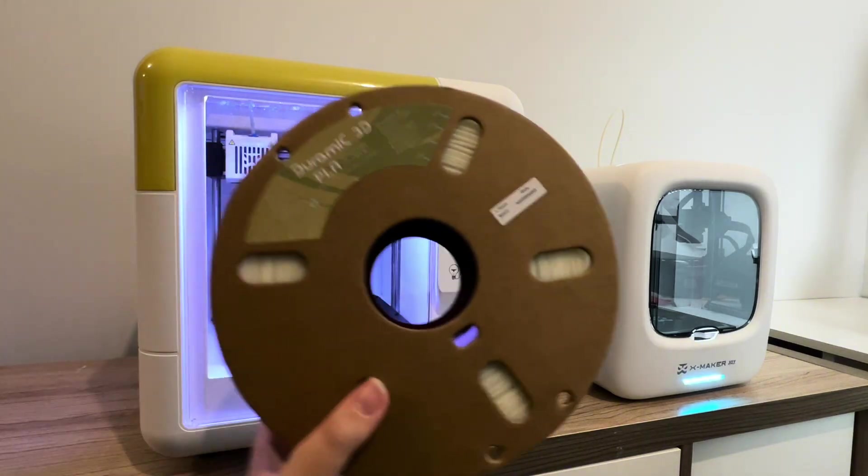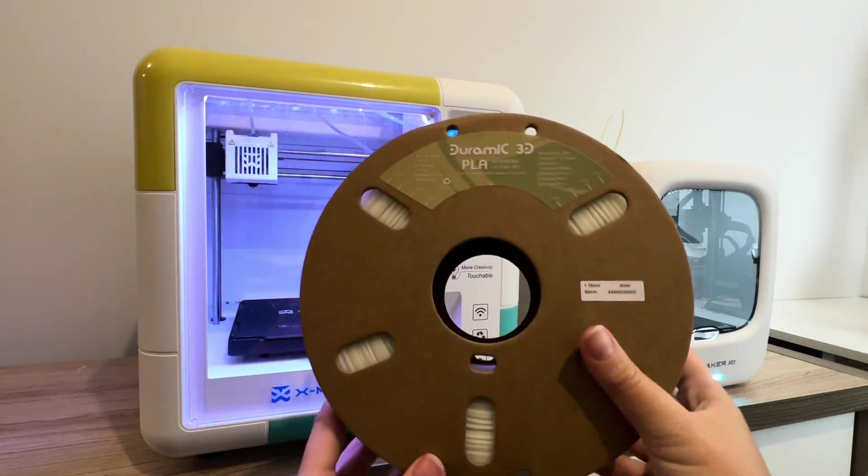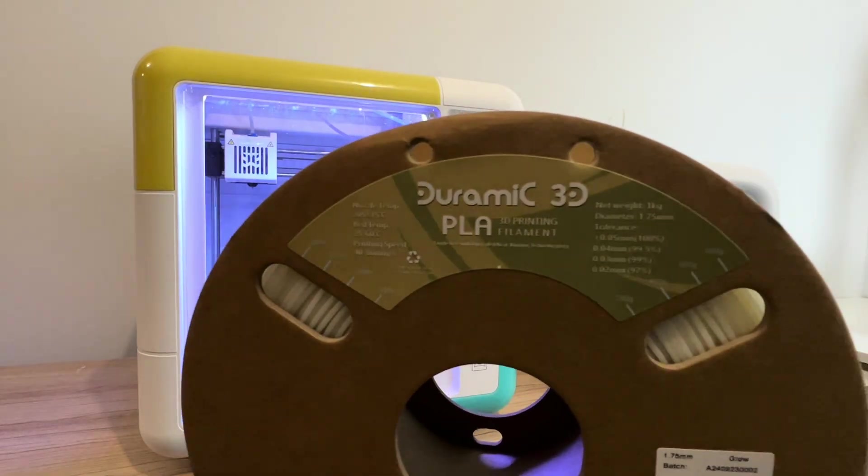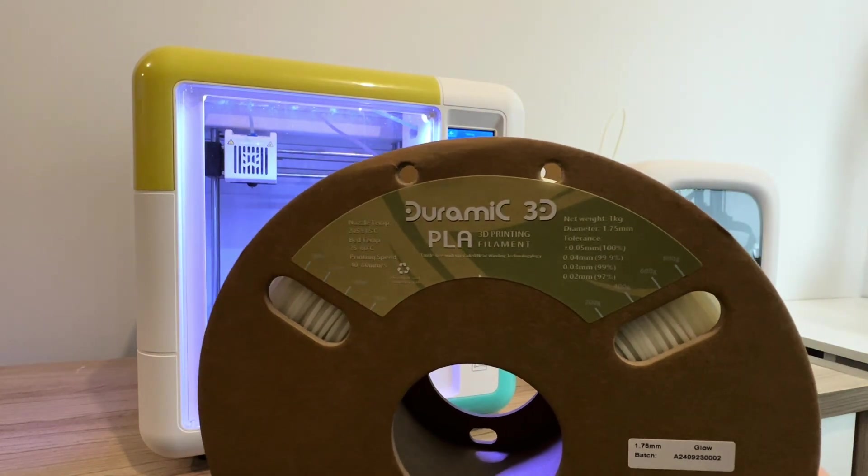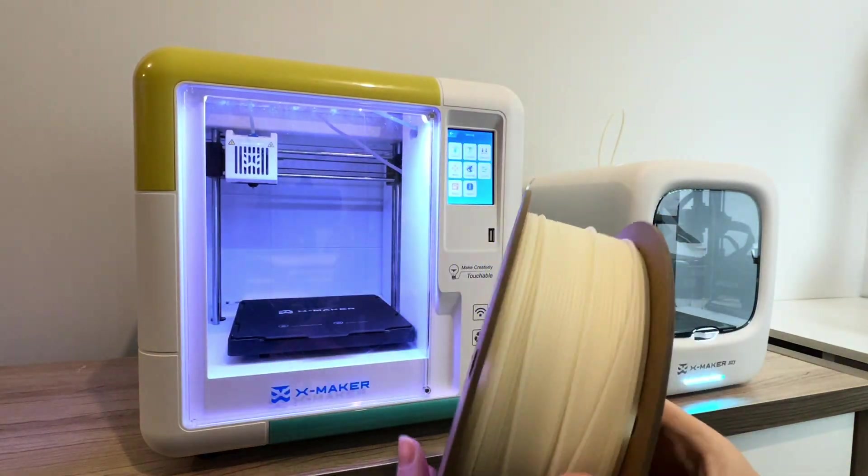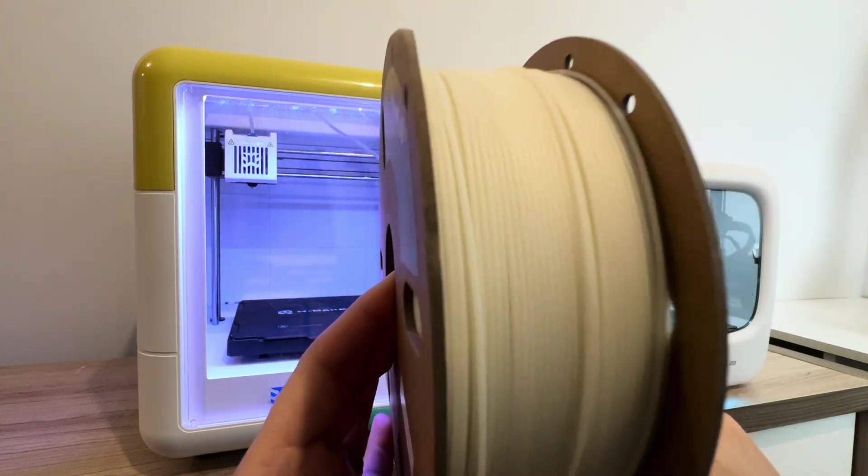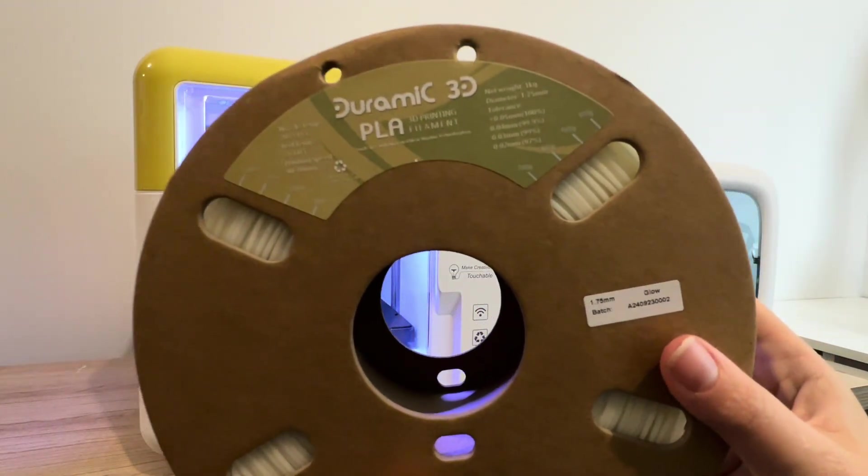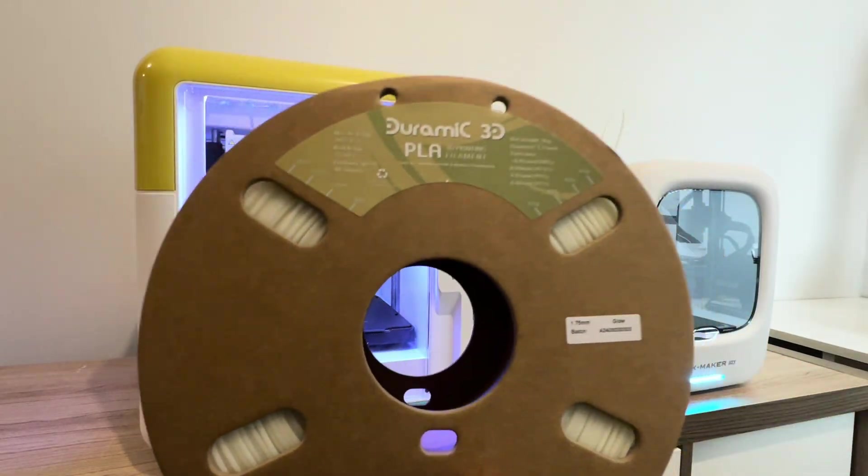First thing we're going to do is put in our filament. I'm going to use this really cool glow-in-the-dark filament from Deramix 3D. This actually glows in the dark, so we'll show you later the effect when you turn the lights out. My kids love this glow-in-the-dark PLA.